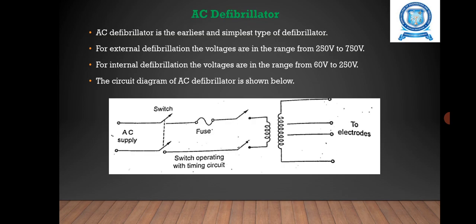The AC defibrillator is the easiest and simplest type of defibrillator. It is constructed to provide appropriate voltage for both external and internal defibrillation. The voltage ranges from 250 volts to 750 volts for external defibrillation, and from 60 volts to 250 volts for internal defibrillation.